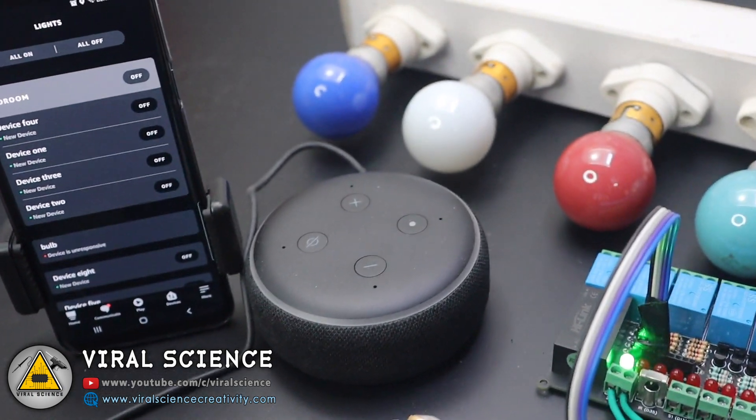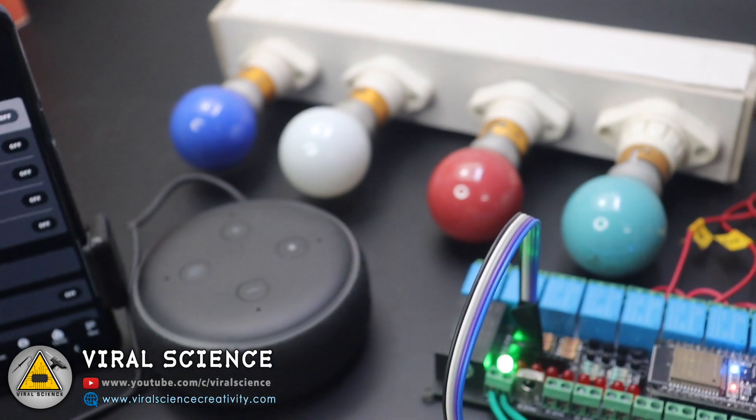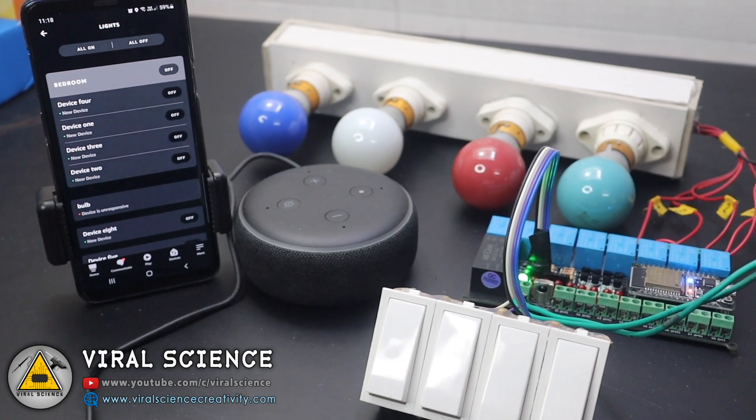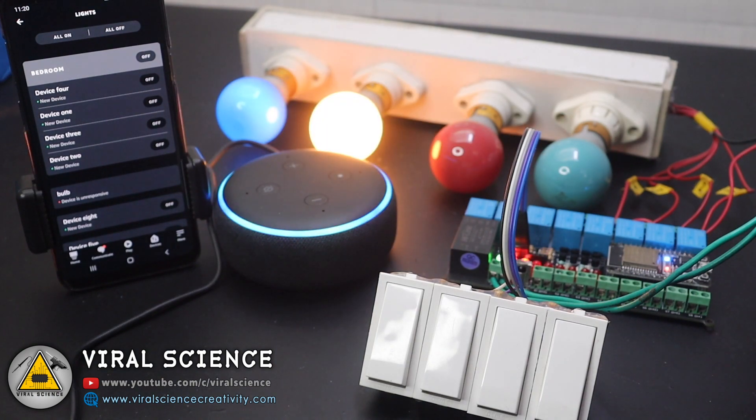Hey friends, welcome back. In this video I'll show you how to make a home automation system which can be controlled with Amazon Echo Dot, Amazon Alexa app, and manual switches. Alexa, turn on device one. Okay. Alexa, turn on device two. Okay.